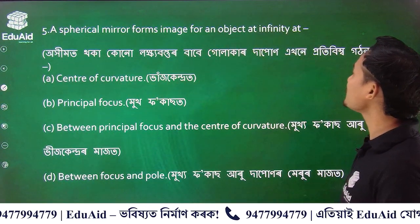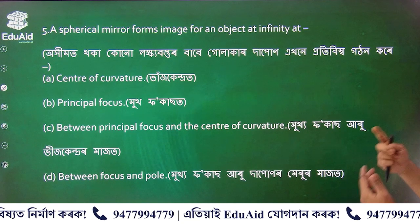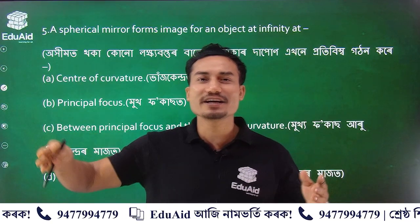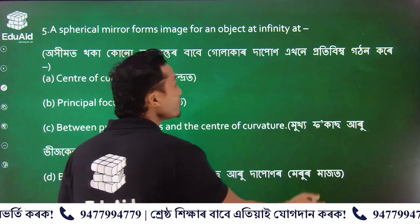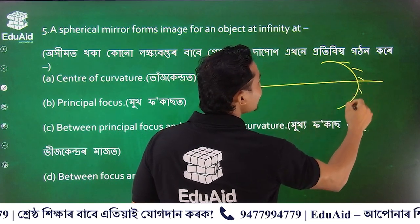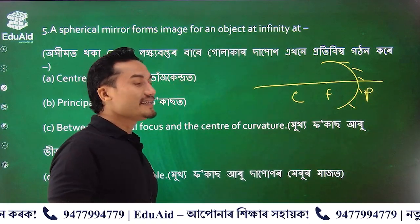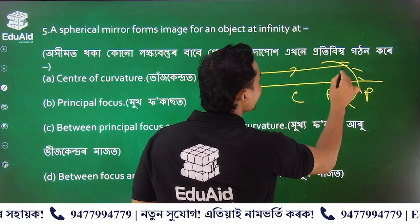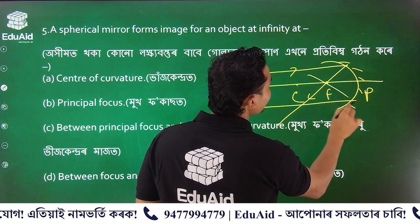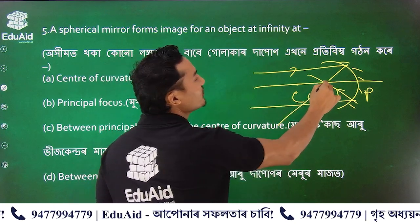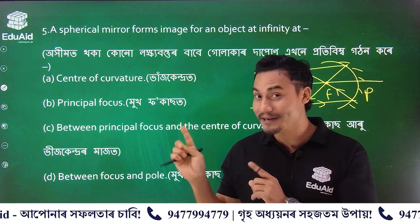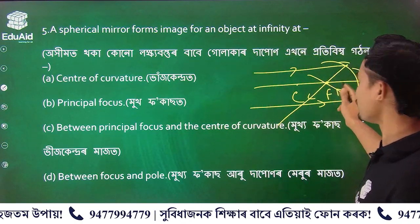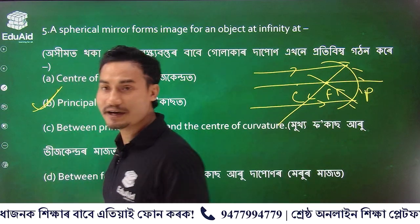A spherical mirror forms an image for an object at infinity. What is the infinite distance? Parallel rays from infinity converge at the focus point. The question is related to the focus point. It's the principal focus. For an object placed at the principal focus of a concave mirror, the position of the image formed is at infinity — just reverse the question.